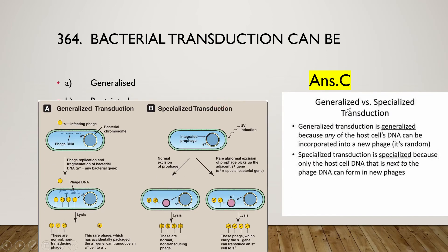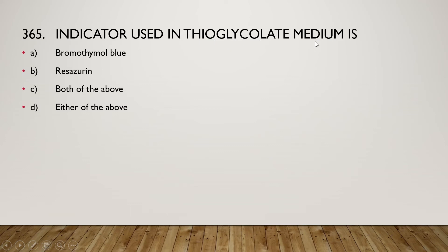In generalized transduction, any host cell DNA can be incorporated into the new phage randomly. In specialized transduction, only the host cell DNA adjacent to the phage DNA can form new phage, so only a specific gene near the phage gene will be transferred. This is why it is called specialized or specific transduction.